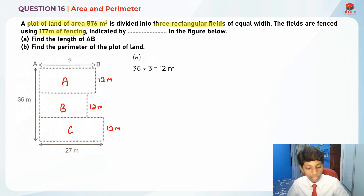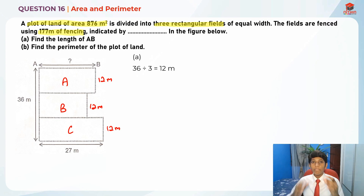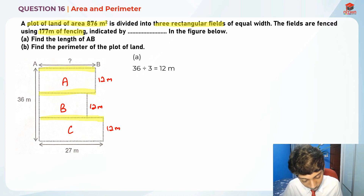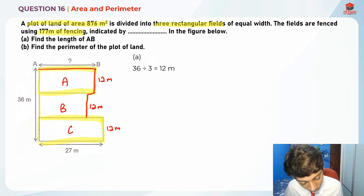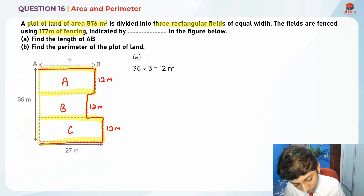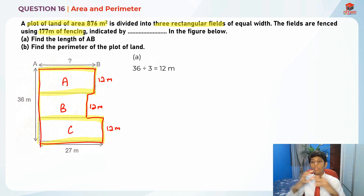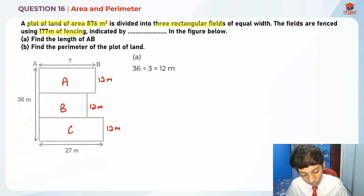They also give us the total amount of fencing in meters. Do take note: this is not the perimeter — the perimeter is different. The perimeter is this red outline I'm drawing around the outside. So the perimeter is different from the total fencing. Now that we're clear on that, we know it is 177 meters of fencing.